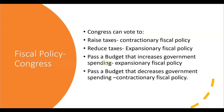Congress could also pass a budget that increases government spending, which is seen as expansionary fiscal policy — more money is being spent to keep a recession from happening. Or Congress could pass a budget that decreases government spending, which would contract the economy — contractionary fiscal policy — done if they feared the economy was running too hot or inflation was a concern.